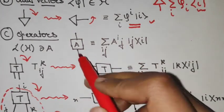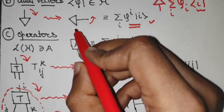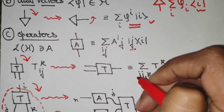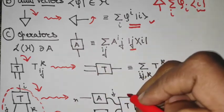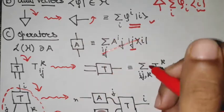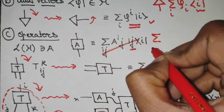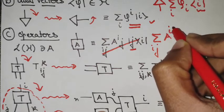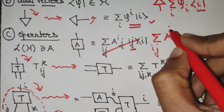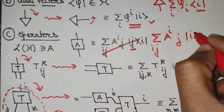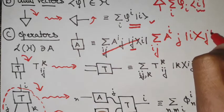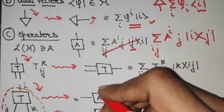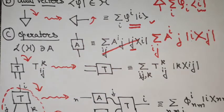For operators, there is an arrow going inside and an arrow coming outside. The arrow coming outside is associated with a ket and the arrow going inside is associated with a bra. The representation is a summation over ij of a^i_j. The up part is associated with a ket and the down part is associated with a bra. This is the representation of this bounded linear operator over the Hilbert space.